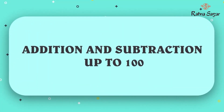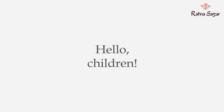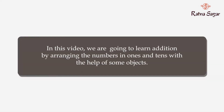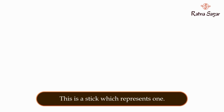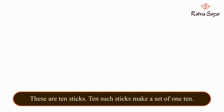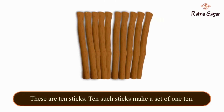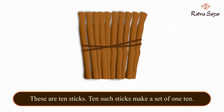Addition and subtraction up to 100. Hello children! In this video, we are going to learn addition by arranging numbers in ones and tens with the help of some objects. This is a stick which represents one. These are 10 sticks — 10 such sticks make a set of 10.